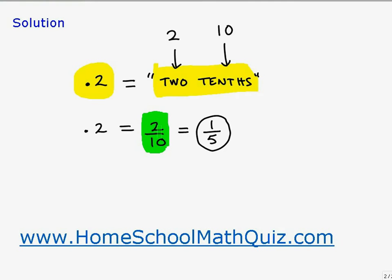So the fraction two tenths is equivalent to the decimal two tenths. And then last but not least, we want to go ahead and reduce our fraction two tenths to its equivalent fraction or simplified fraction of one fifth.